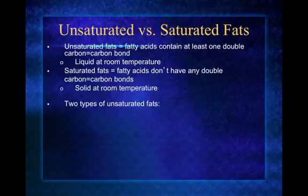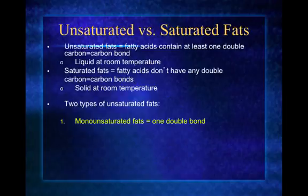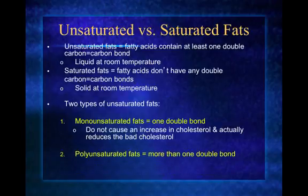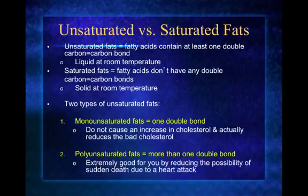There are two types of unsaturated fats. Monounsaturated fat means there's only one double bond found in the fatty acids. Monounsaturated fats are very good for you — they actually reduce the cholesterol you have and reduce bad cholesterol. Polyunsaturated fats mean there's more than one double carbon bond found along the fatty acid chains — poly meaning many. These are extremely good for you and can actually reduce the risk of sudden death when you have a heart attack.